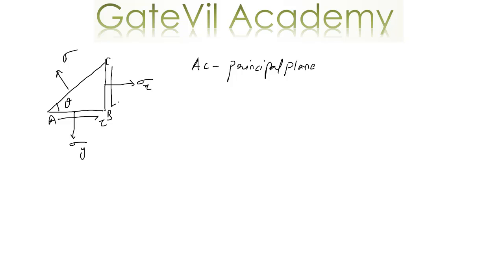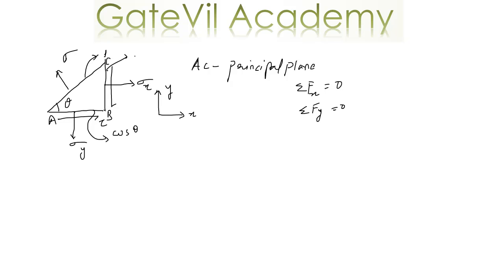To find out the value of sigma, first let us assume a coordinate axis for our reference — this is X, this is Y. We can apply summation Fx equal to 0 and summation Fy equal to 0. Before applying these, let's convert these stresses into forces. Area of AC is 1. Then area of AB will be cos theta and the area of BC will be sin theta. So the corresponding forces will be sigma X sin theta, tau sin theta, tau cos theta, and sigma Y cos theta. So these are forces now. And sigma multiplied by the area of plane AC, which is 1, will remain sigma.